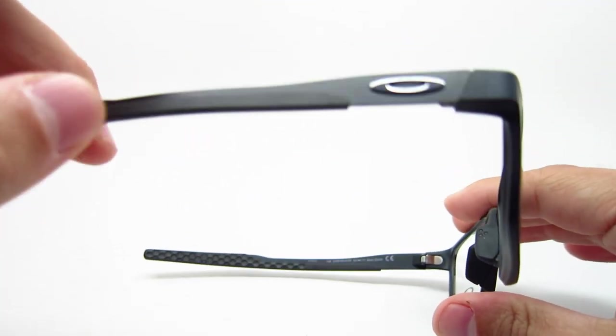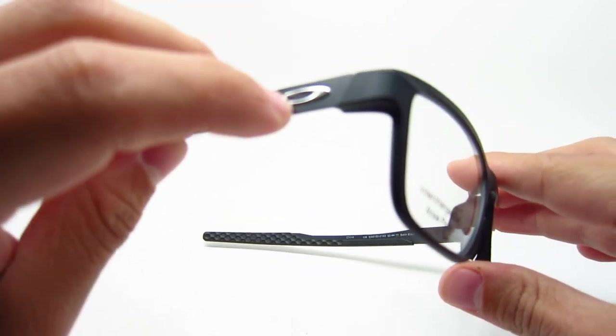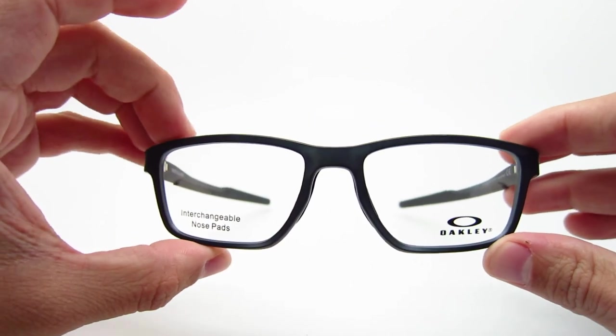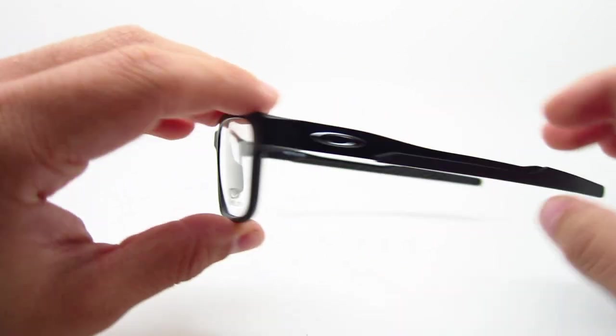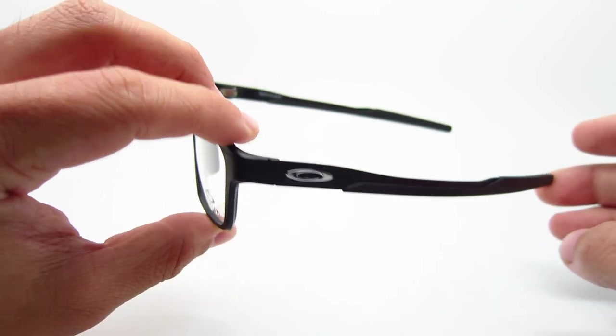So it is a matte black, even the metal pieces are matte. And the emblems on the side are going to be silver. Very nice.